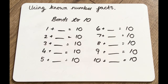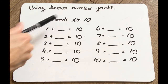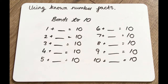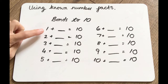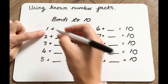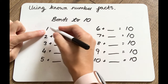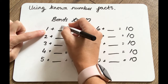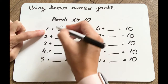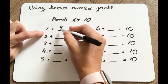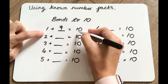Before we go on to our mental math strategy this week, we're just going to recap our bonds to 10. These are numbers that go together to add up to the number 10. So if we've got 1, what do we need to add to 1 to make 10? 9. So 1 add 9 equals 10.